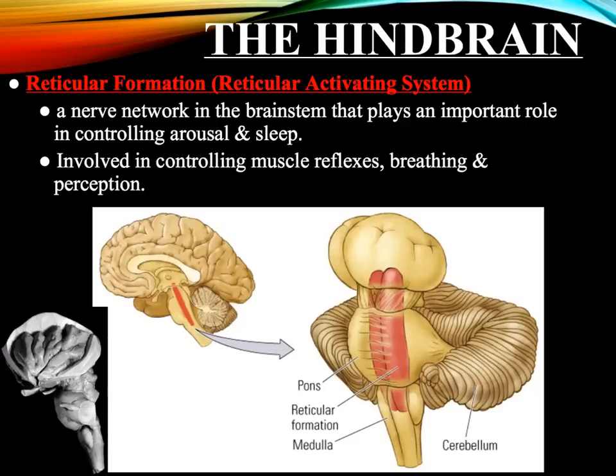The last part of the brain stem we will discuss is the reticular formation. The reticular formation is a nerve network that runs throughout the brain stem from top to bottom, playing an important role in controlling arousal and sleep. If your teacher is really boring and you start to doze off, the reason is that your reticular formation is not sufficiently aroused, causing it to cut off energy to your brain, making you fall asleep. The reticular formation is also involved in controlling muscle reflexes, breathing, and perception — very important to life-sustaining functions.